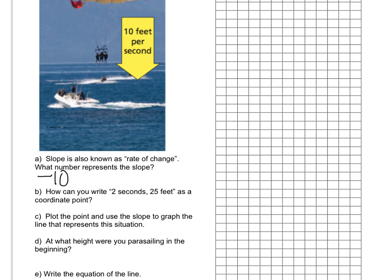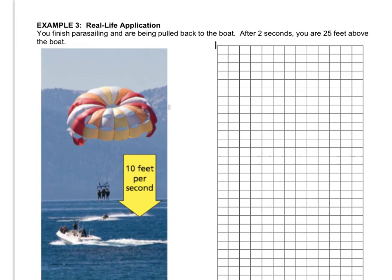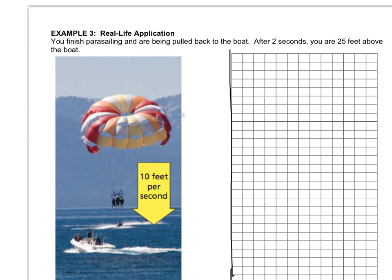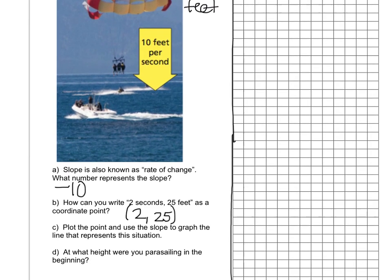How can you write 2 seconds, 25 feet as a coordinate point? Well, if we're going to let x represent seconds and y represent feet, that will be the point (2, 25). Letter c: plot the point and use the slope to graph the line that represents this situation. So we're going to make a super big quadrant 1. And x is representing seconds and y is going to represent feet. What I'd like you to do is pause the video and plot the point (2, 25) and get a couple more points by using the slope -10. Make it fill up the whole grid, grab a straight edge or a ruler, and when you have that line, play the video back.